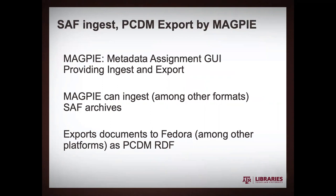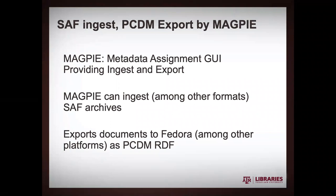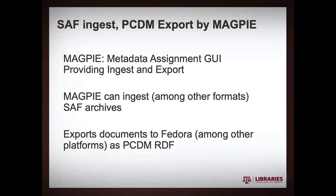SAF is the first document shown — that's the Simple Archive Format. It's part of our legacy as a DSpace shop and is your go-to batch import format for DSpace. We also have this additional application called Magpie — the Metadata Assignment GUI Providing Ingest and Export. Magpie can ingest those SAF archives and can also export the documents it ingests to Fedora using PCDM RDF — that's the Portland Common Data Model — which allows you to format your objects with hierarchies and sequences of pages.